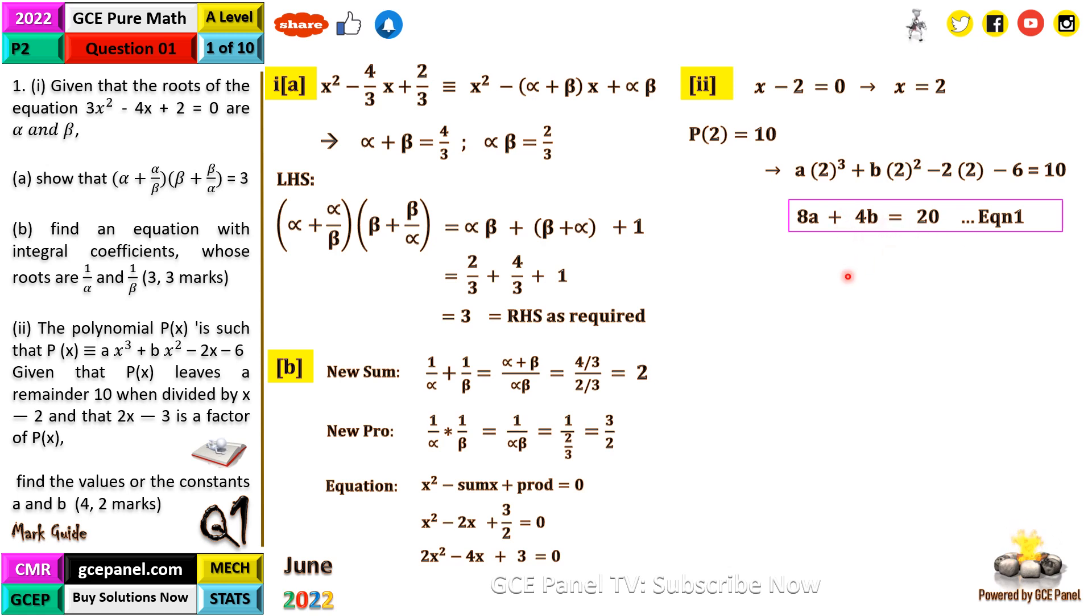We're told that 2x - 3 is a factor. Equating 2x - 3 = 0, x = 3/2. Therefore P(3/2) = 0. Substituting: a(27/8) + b(9/4) - 3 - 6 = 0. Simplifying gives us 27a + 18b = 72. We call this Equation 2.